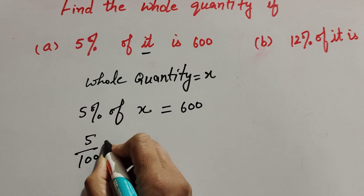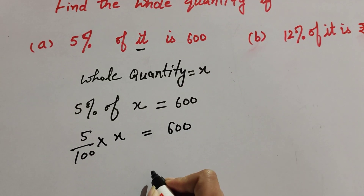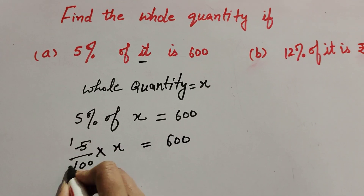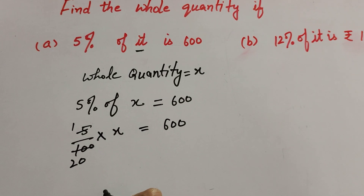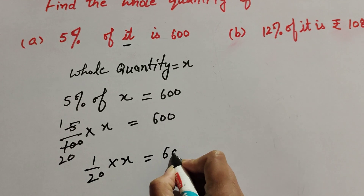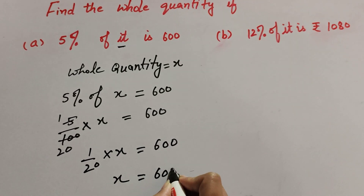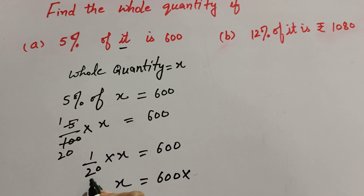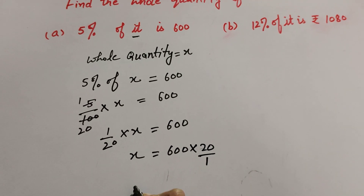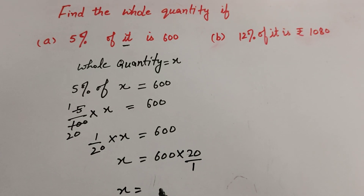5% is 5 over 100, multiply x equals 600. 5 and 100 are both divisible by 5, so we cancel them — 5 ones are 5, 5 twenties are 100 — giving 1 over 20 times x equals 600. Transposing to the right hand side, we multiply by the reciprocal 20 over 1, so x equals 600 multiplied by 20, which equals 12,000.